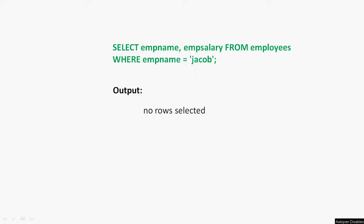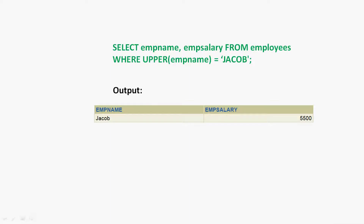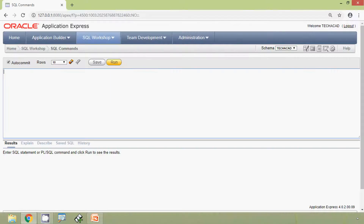We are going to change this query to: SELECT mb_name, mb_salary FROM employees WHERE UPPER(mb_name) = 'JACOB'. Here we used the function UPPER along with the column mb_name, and the search value 'JACOB' is given in uppercase. The result shows mb_name Jacob with his mb_salary.